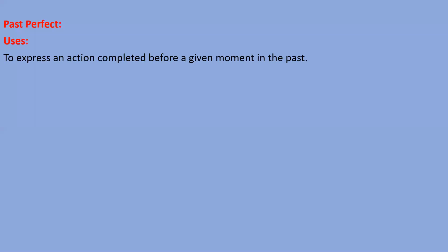To express an action completed before a given moment in the past. Dear students, we have to understand when something happened in the past before a given moment of the past, then we have to use past perfect tense. In simple words, when we talk about past of past, then we have to use past perfect tense. Let me make you understand this with some examples.